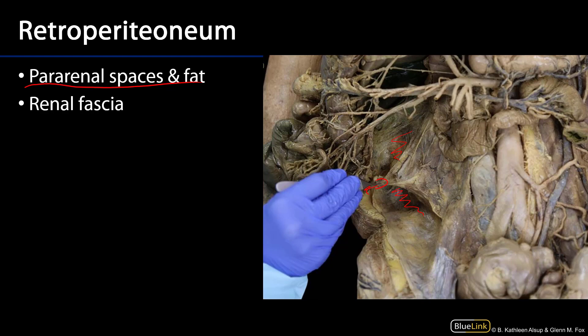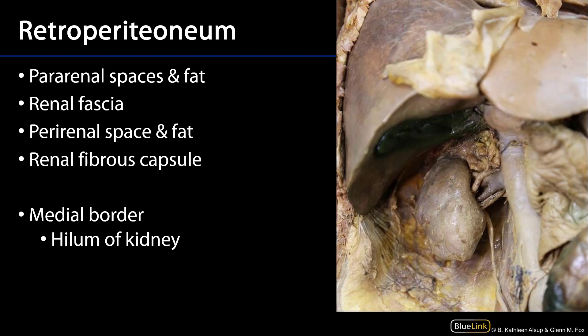The posterior pararenal space is found posterior to the perirenal space and renal fascia, and is a space devoid of viscera and only contains adipose connective tissue. Here we can see a similar view as in the last photograph, with the renal fascia or perirenal fascia incised and removed. This region here would be a part of the anterior pararenal space and would be filled with adipose connective tissue in vivo.